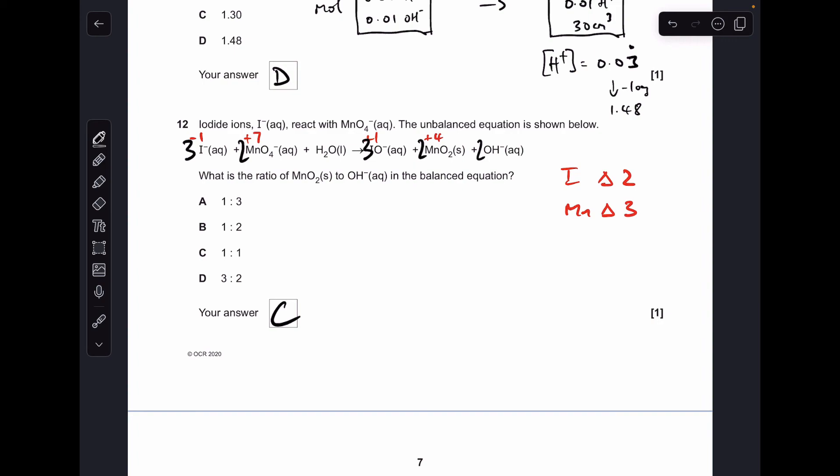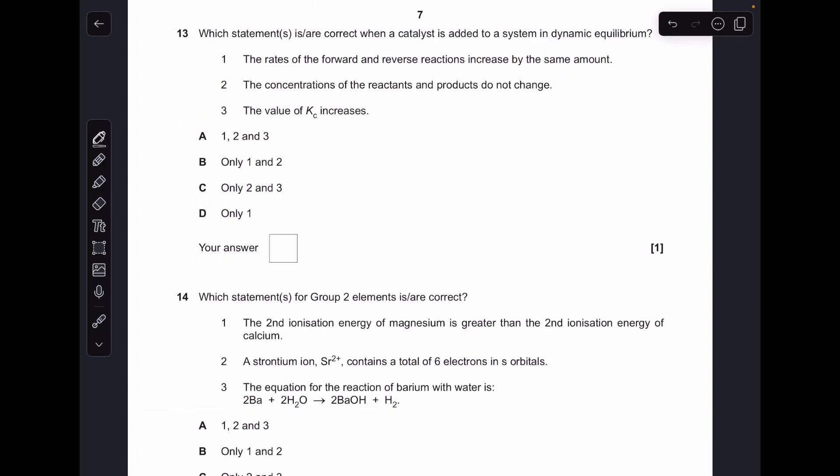Moving on, number 13. So which statements are correct when a catalyst is added to a system in dynamic equilibrium? Number one, rate of forward and reverse reactions increase by the same amount. Yep, that's right. Two, concentrations of reactants and products don't change. That's also correct. Three, value of Kc increases. Nope, that one's wrong, because temperature is the only thing that will change Kc. So one and two only, B was right.